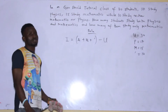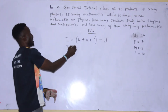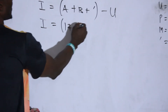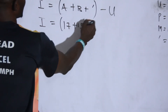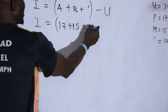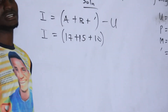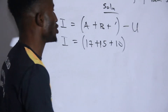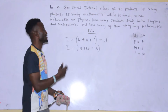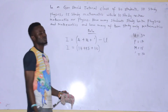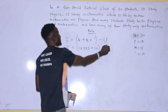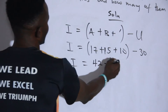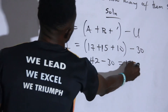As the question asks us to find those that study both subjects, that is I. So our I will now be A — the first subject, which is 17 — plus B, which is 15, plus those that do not study at all, which is 10. In case everybody participates, then the complement would be zero. Minus the universal set, which is 30. If you calculate this, this should equal 42 minus 30, so the final answer is 12.